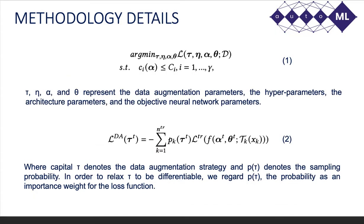Multiple AutoML components are considered in DHA, including DA, HPO, and NAS. Let tau, eta, alpha, and theta represent the data augmentation parameters, the hyper-parameters, the architecture parameters, and the objective neural architecture parameters, respectively. This problem can be formulated as shown in equation 1. In order to relax tau to be differentiable, we regard P(tau), the probability, as an importance weight of the loss function as seen in equation 2, where capital tau denotes the data augmentation strategy and P(tau) denotes the sampling probability.